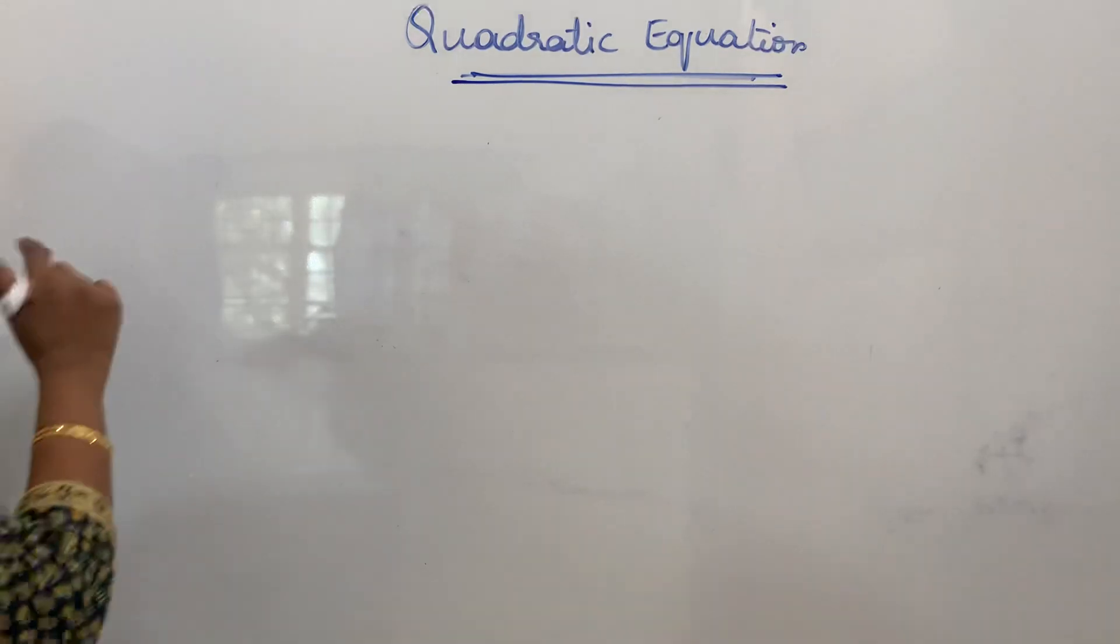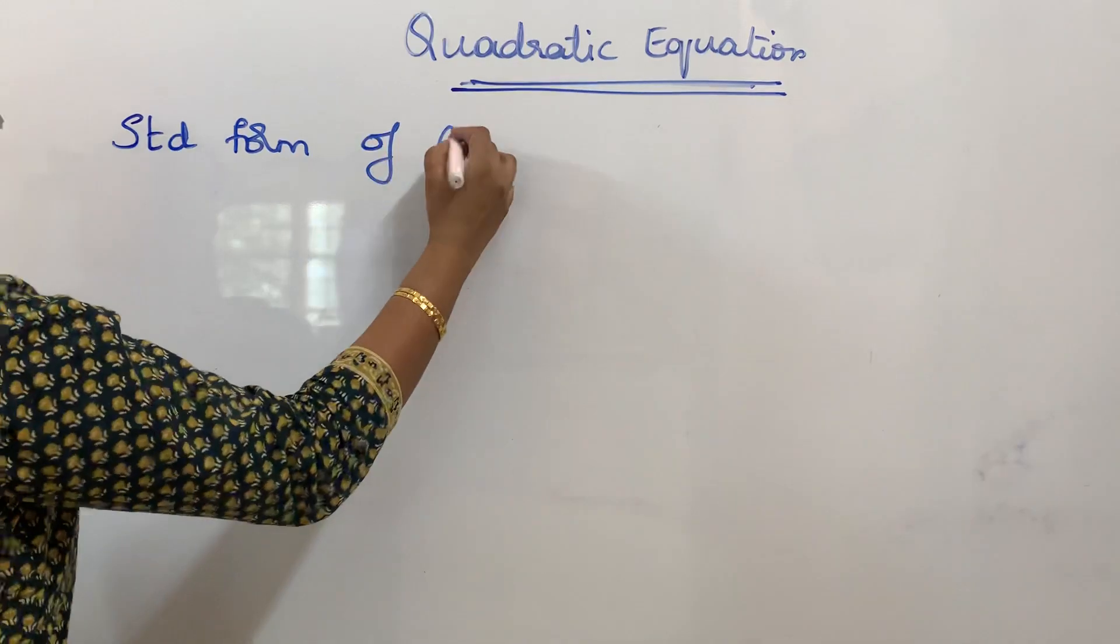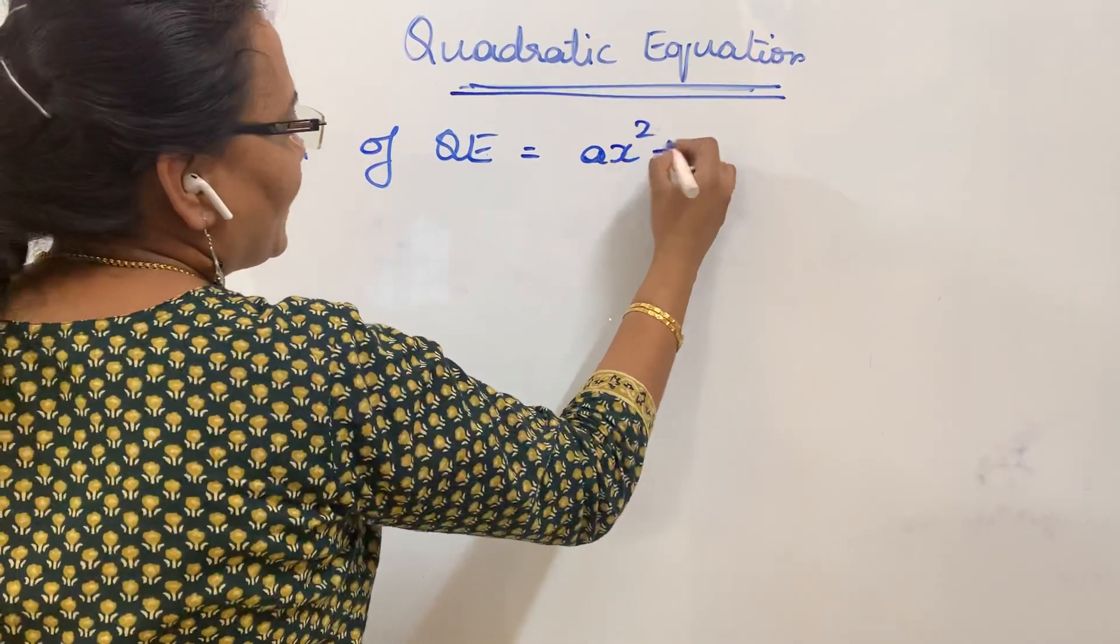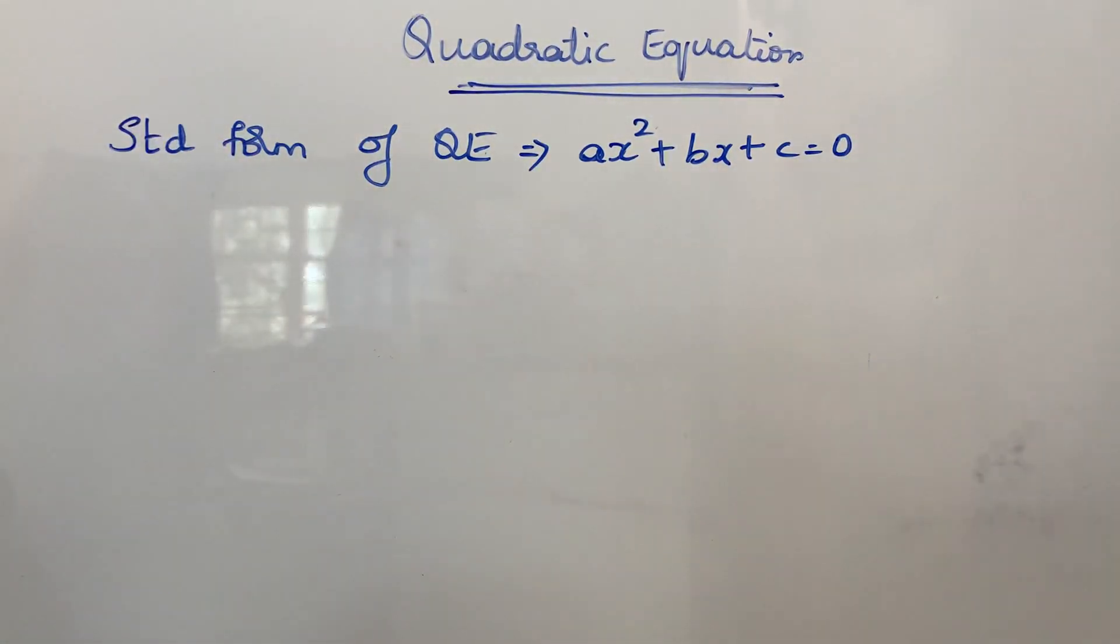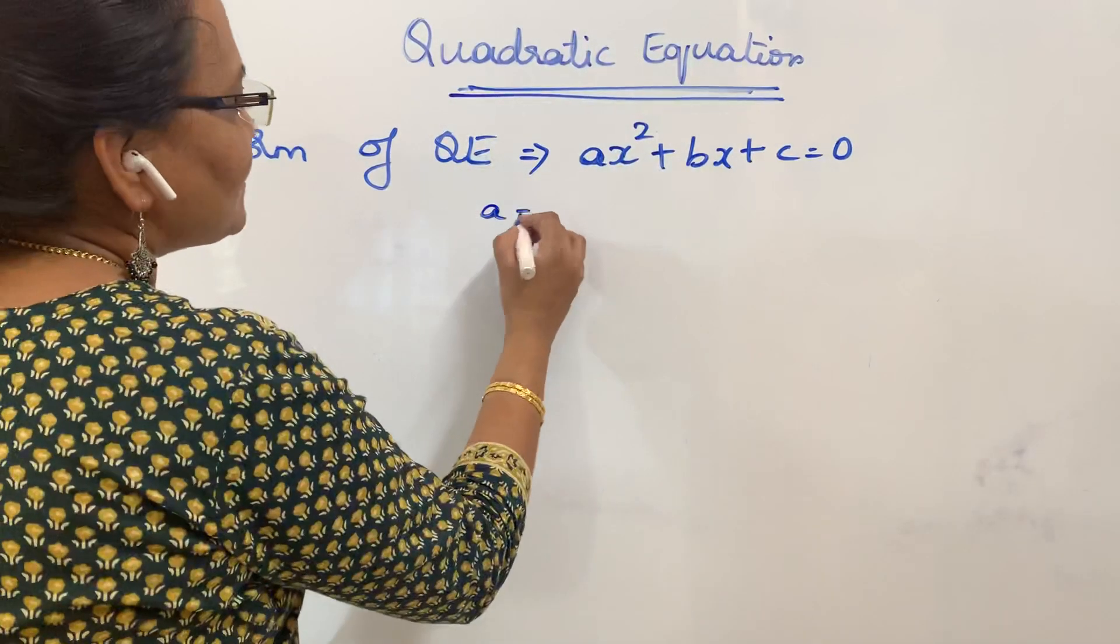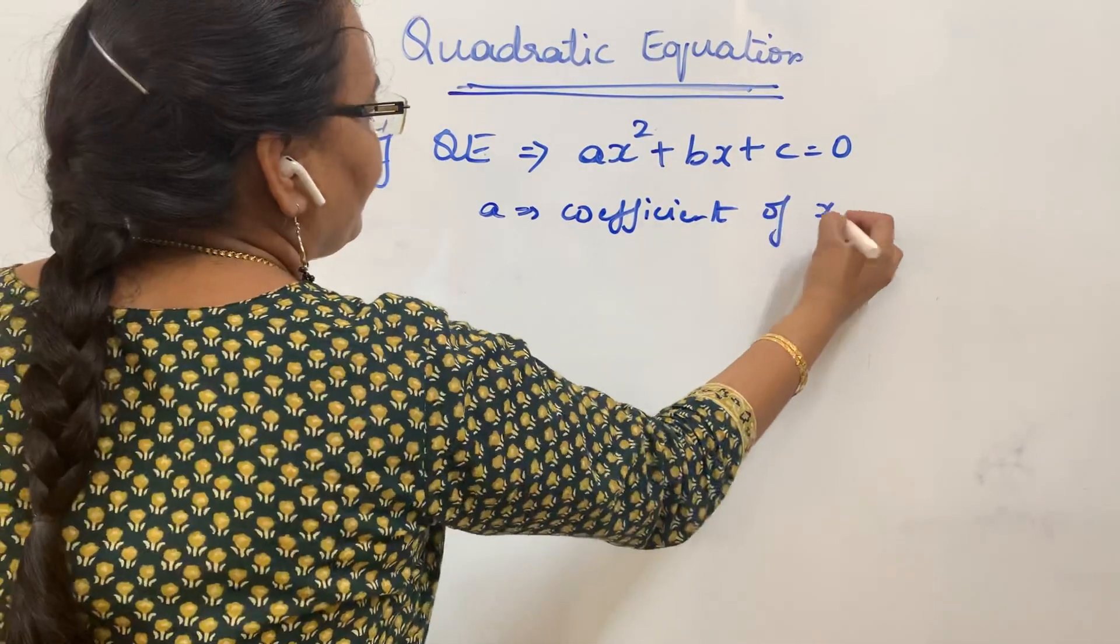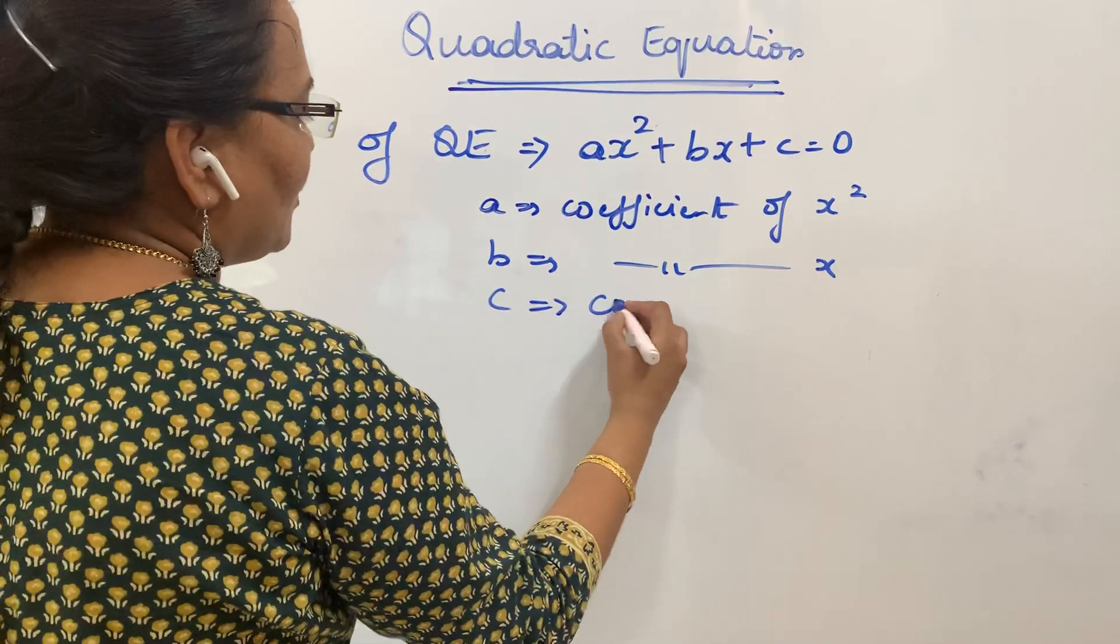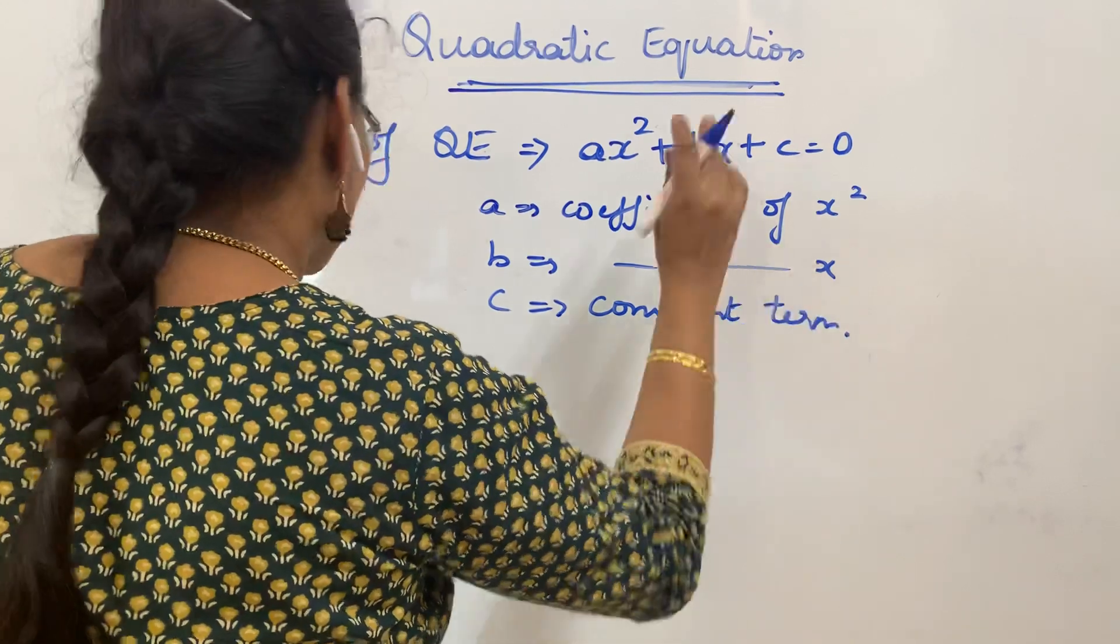Now what is the standard form of Quadratic Equation? Standard form of Quadratic Equation is given by AX² + BX + C = 0, with the constant on the left hand side, where A is coefficient of X², B is coefficient of X, and C is a constant term. This is the standard form.